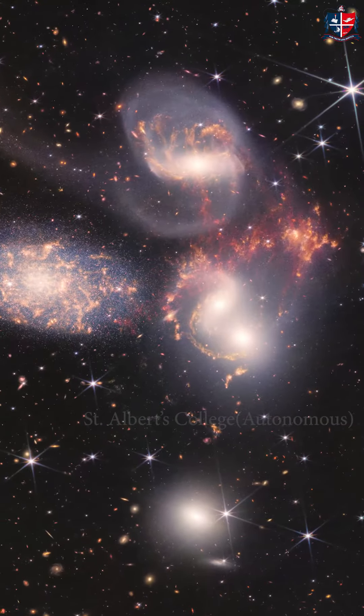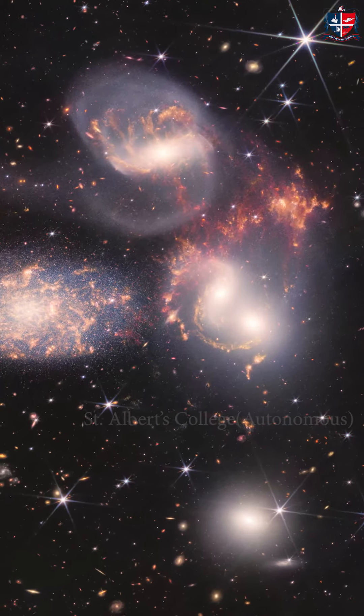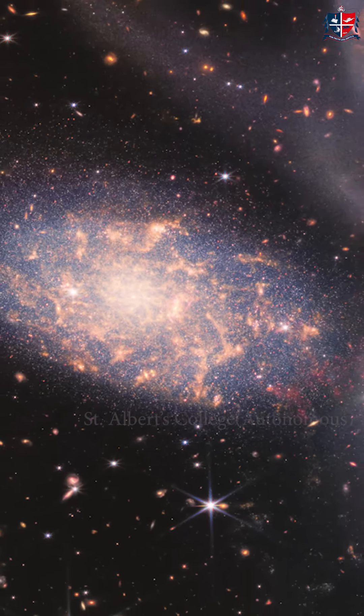The third image is named as Stephens Quintet. Here we can see five galaxies, four of which interact. The left galaxy in the image is actually much closer to us than the rest of the group.